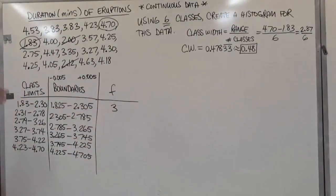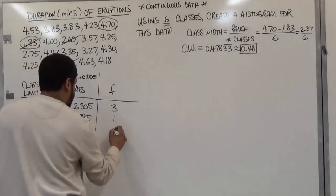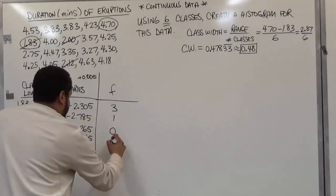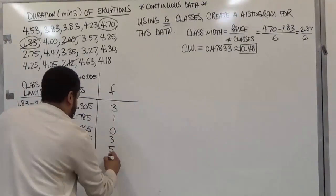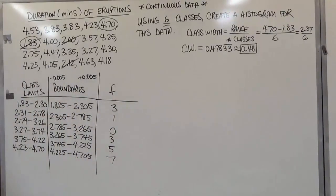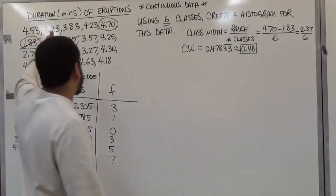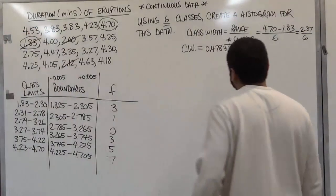If you do this correctly for every class, you'll get the numbers 1, 0, 3, 5, and 7. Now, this is the completed frequency distribution with class boundaries of the duration in minutes of the eruptions.